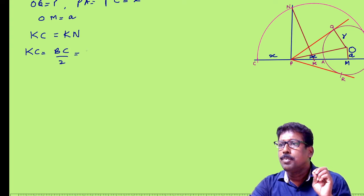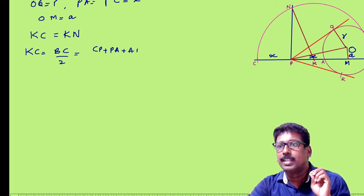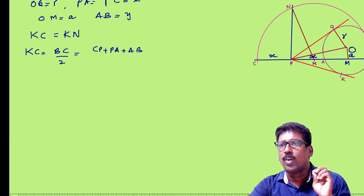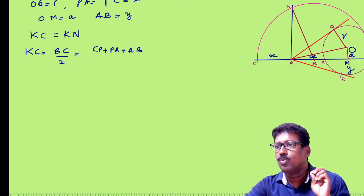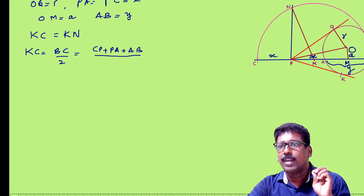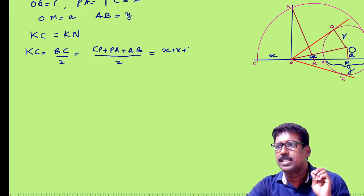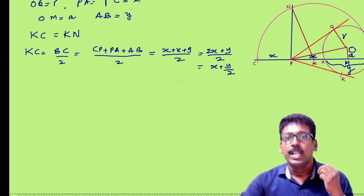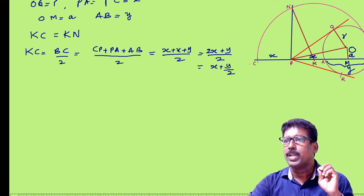Now what is BC? BC is CP + PA + AB. Let me take the length AB as Y. So BC = X + X + Y = 2X + Y. Therefore KC = BC/2 = (2X + Y)/2 = X + Y/2. So the length of KN is equal to X + Y/2.